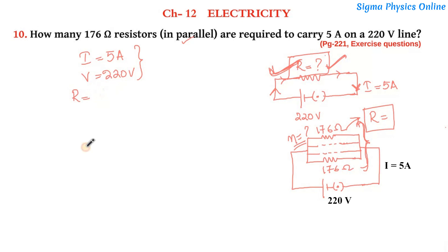From Ohm's law, V equals IR, so resistance will be V by I, that is 220 by 5, which equals 44 ohms. Now the value of this resistance is 44 ohms, so the resistance is 44 ohms which is the total resistance of this circuit.